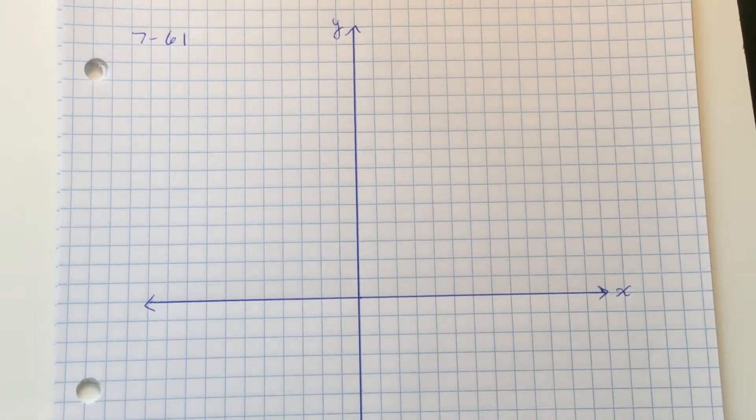7-61, graph the points in the table and draw a line, then find three different ratios to describe the slope of this line.